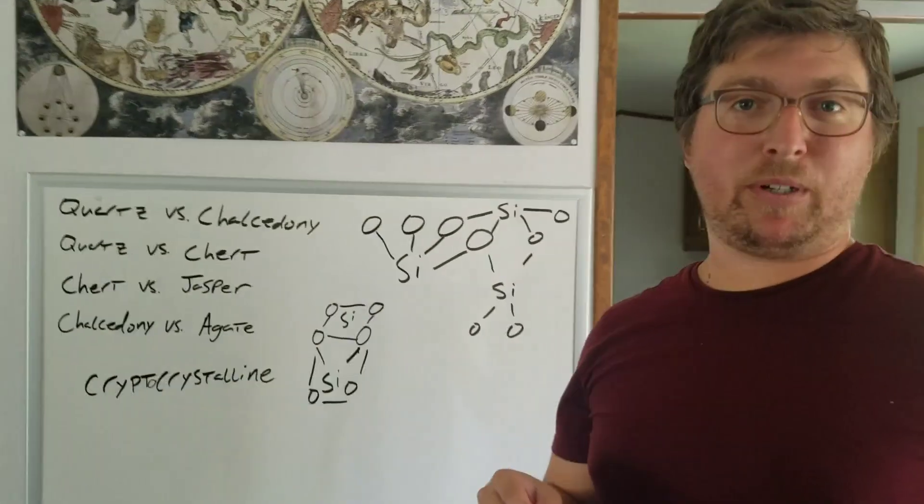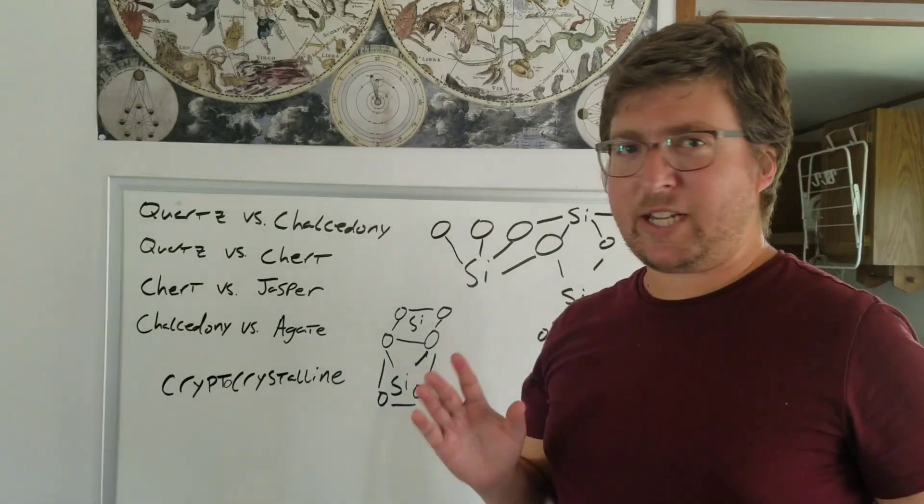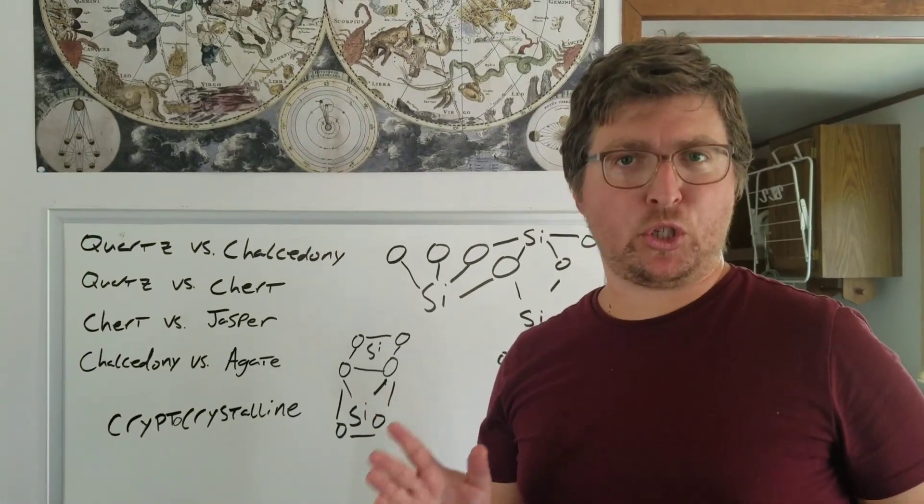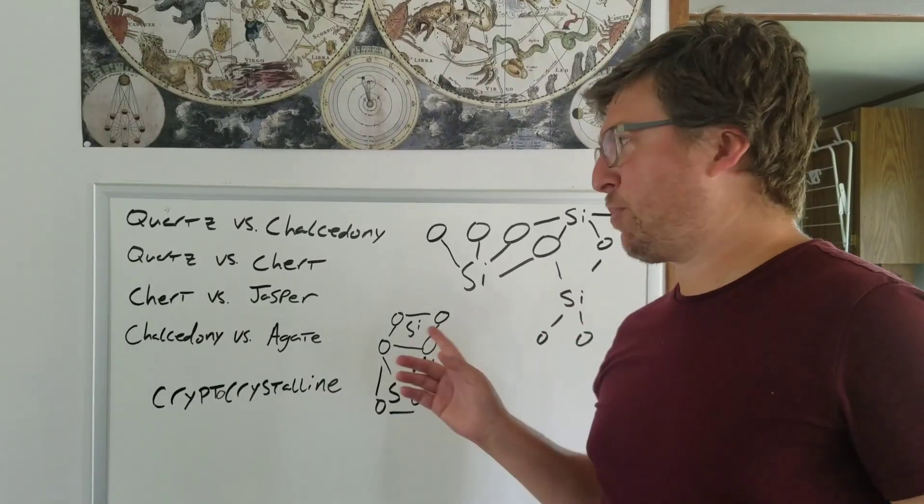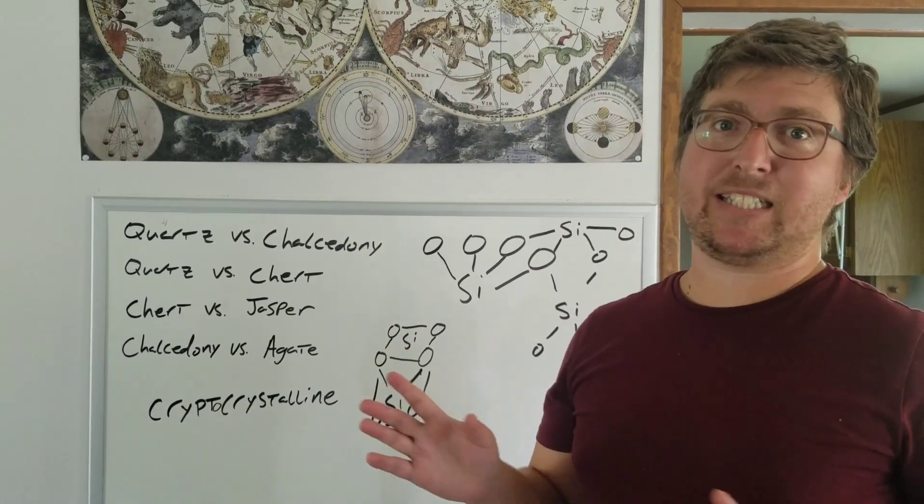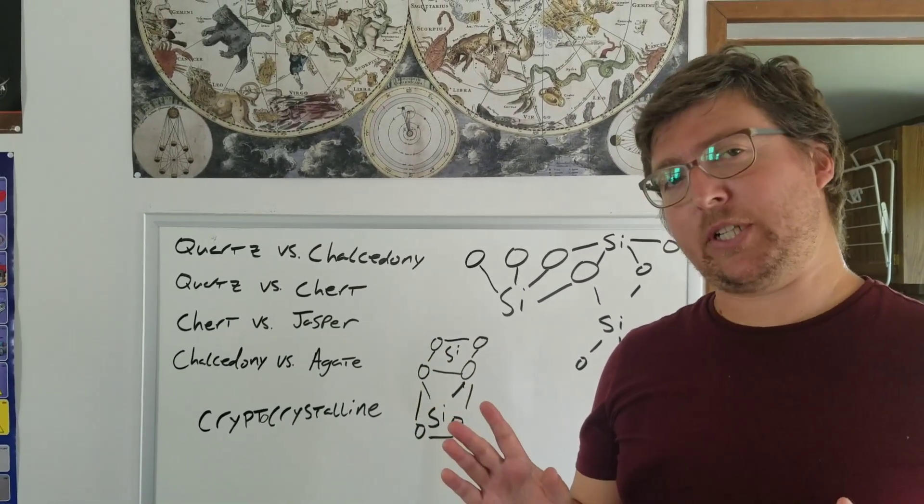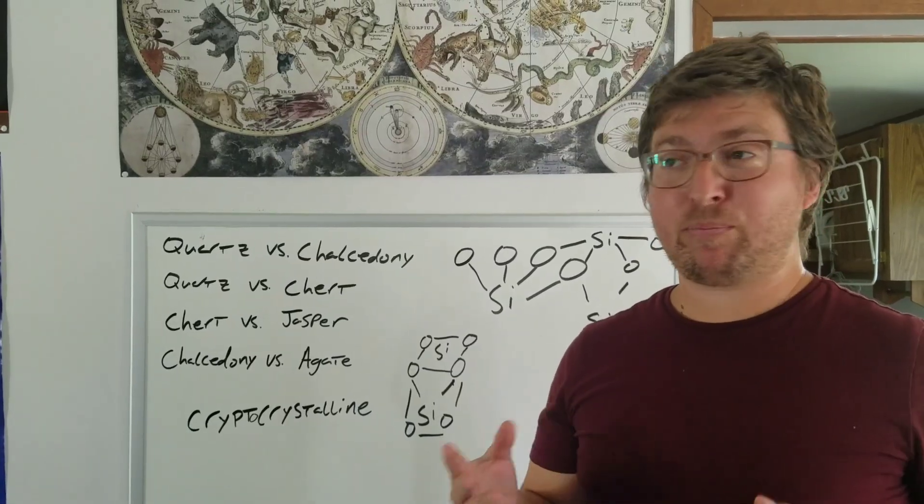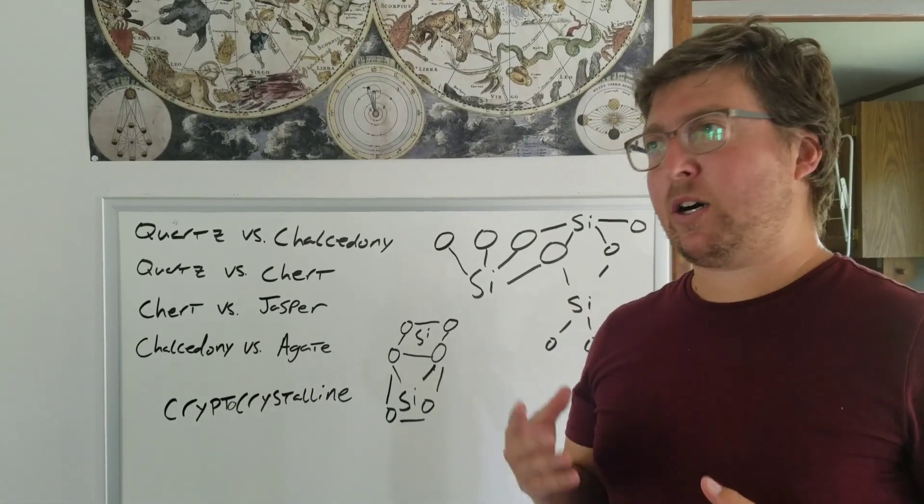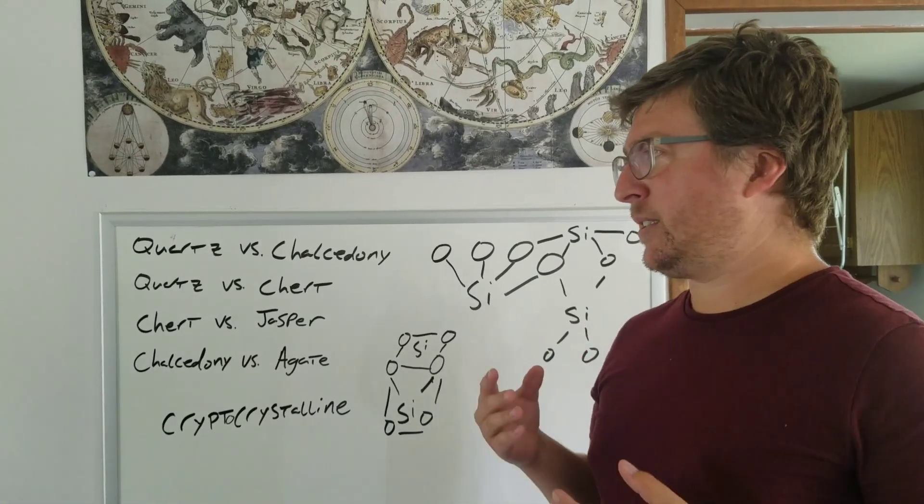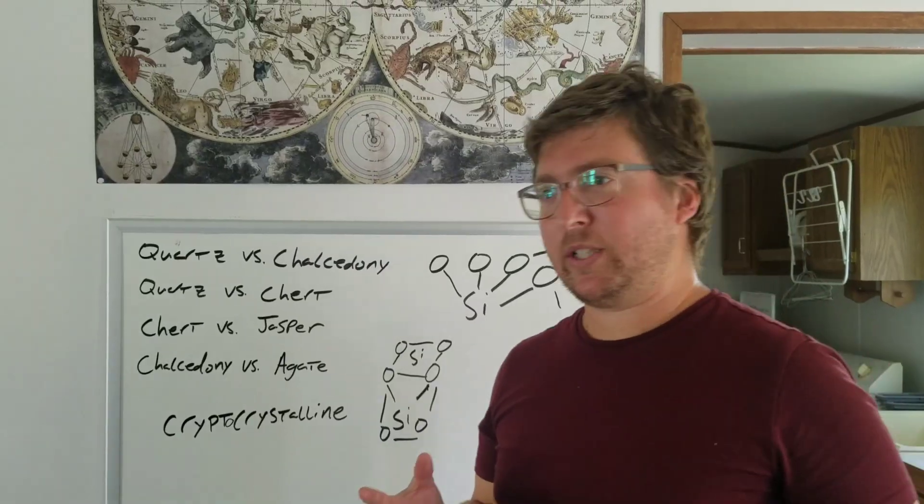How about chert versus jasper? This is the easy one. Jasper is red chert in Michigan. Jasper is an ancient word that used to be applied to lots of different rocks, way before there was a science of geology. However, it's pretty straightforward in Michigan. All of jasper in Michigan is iron-rich chert.